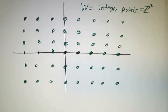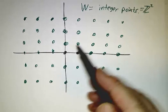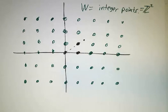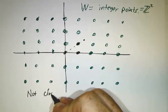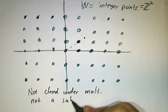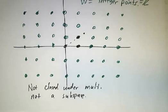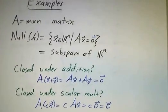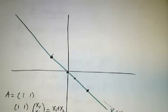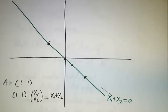Last example: integer points — all points with integer coordinates. Adding any two gives integer coordinates, and multiplying by −3 gives integer coordinates. However, multiplying by √2 gives non-integer coordinates, so this is not closed under scalar multiplication — and therefore not a subspace. Of all our examples, the only subspaces were the null space of an arbitrary matrix and the line x₁ + x₂ = 0. The rest failed one or more of the criteria.